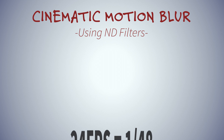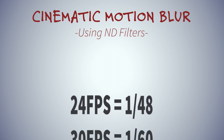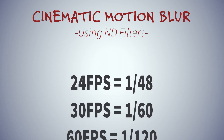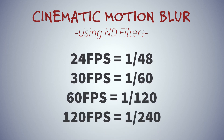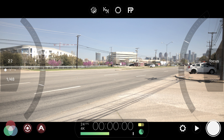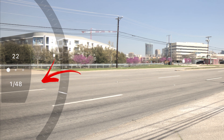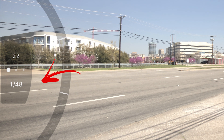Whatever frame rate you shoot, you double that to get the shutter speed for ideal-looking motion blur. So when shooting a movie at 24 frames per second, you would typically want a 1/48 shutter speed, and this is where using ND filters comes into play. Add ND to control exposure and bring down the shutter speed in bright conditions or as needed.